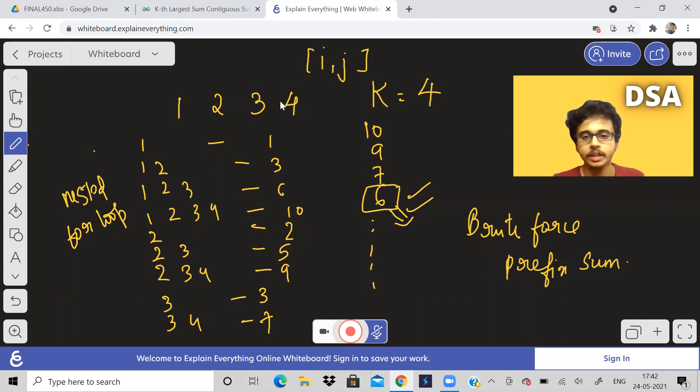They have taken a prefix array called sum, and if you do sum of j minus sum of i minus 1, you will get the sum of the subarray from index i to index j. They are calculating the sum of each and every subarray and putting this inside a min heap. Ultimately, after the entire process ends, the top element of the min heap will be the kth largest.